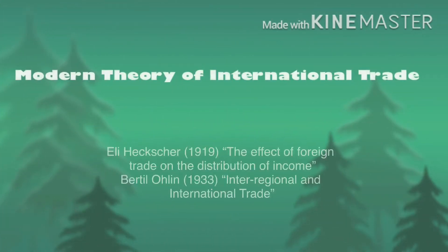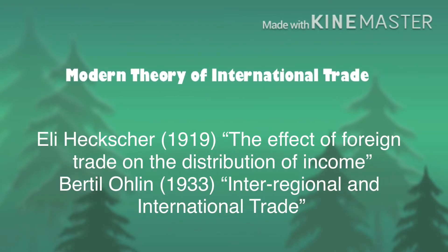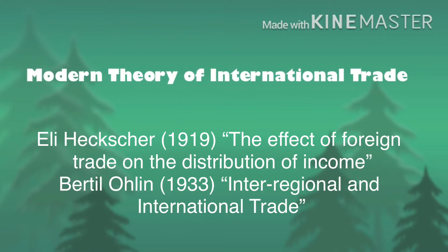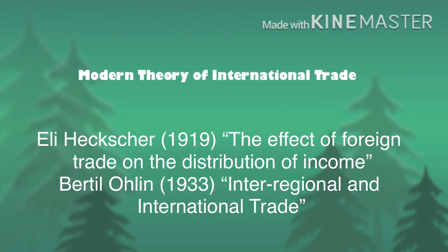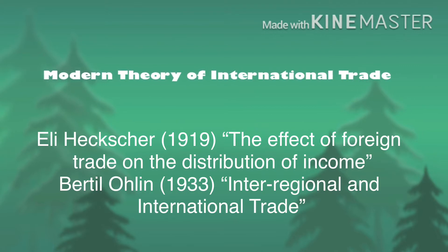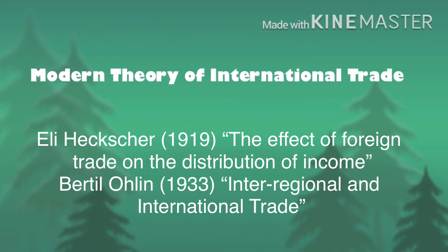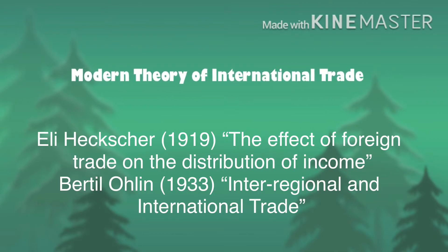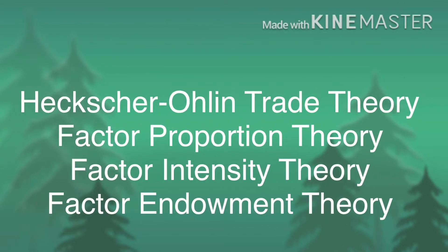E.F. Heckscher, in his work on the effect of foreign trade on the distribution of income published in 1919, and later his student P. Ohlin in his work on inter-regional and international trade published in 1933, laid the foundation for the development of the modern theory of international trade. That is why this theory is known as the Heckscher-Ohlin trade theory.